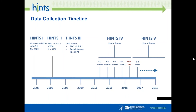HINTS 5 has now been approved. Since HINTS 5 has been approved, we're going to go through cycles just as we did with HINTS 4. We're working right now on the package to the Office of Management and Budget for clearance, and then we'll have four administrations over the course of about three to four years.